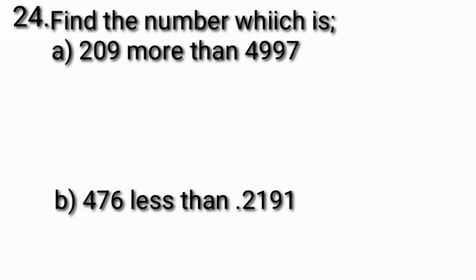Question 24, part A: find the number which is 209 more than 4,997. To find this, we add 209 to 4,997, and after adding we get 5,206.